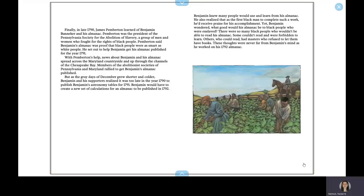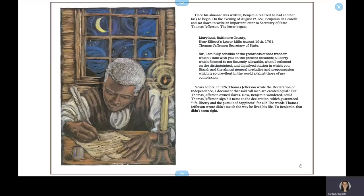Benjamin knew many people would use and learn from his almanac. He also realized that as the first black man to complete such a work, he received praise for his accomplishment. Yet Benjamin wondered what good would his almanac be to black people who were enslaved. There were so many black people who couldn't be able to read his almanac. Some couldn't read and were forbidden to learn. Others, who could read, had masters who refused to let them own books. These thoughts were never far from Benjamin's mind as he worked on his 1792 almanac. Once his almanac was written, Benjamin realized he had another task to begin. On the evening of August 19, 1791, Benjamin lit a candle and sat down to write an important letter to Secretary of State Thomas Jefferson.